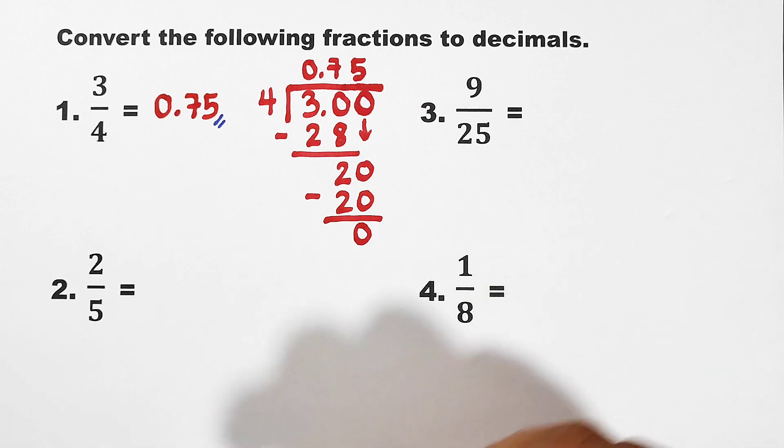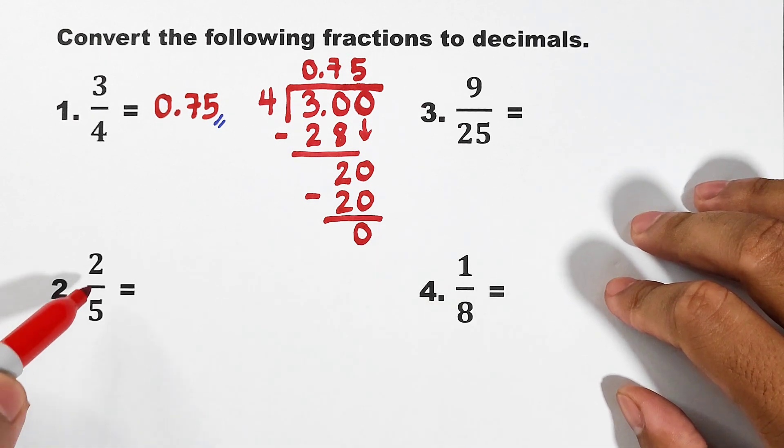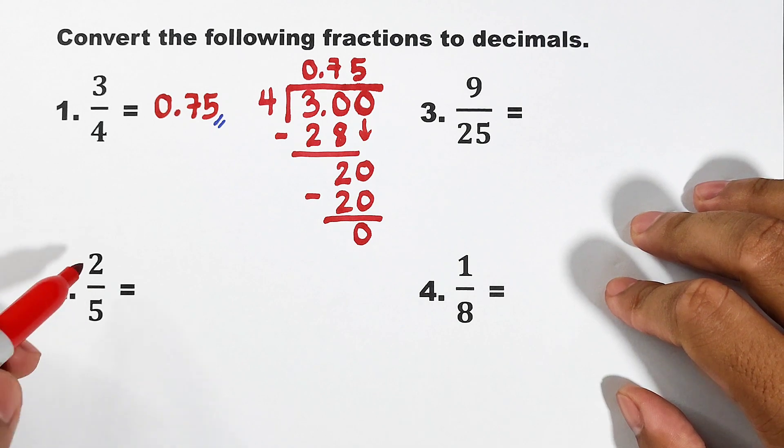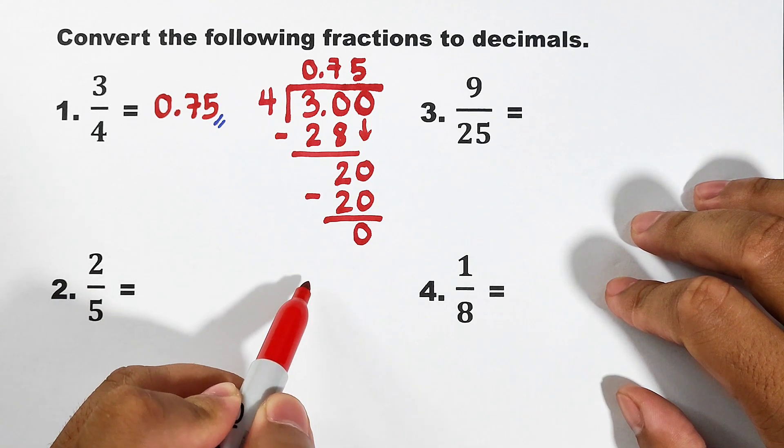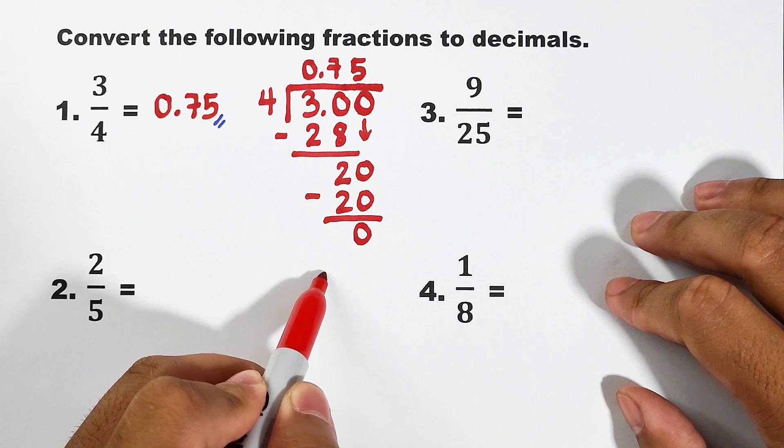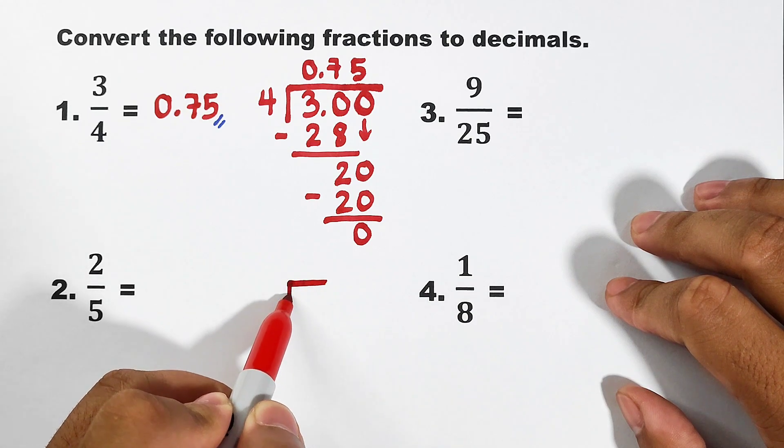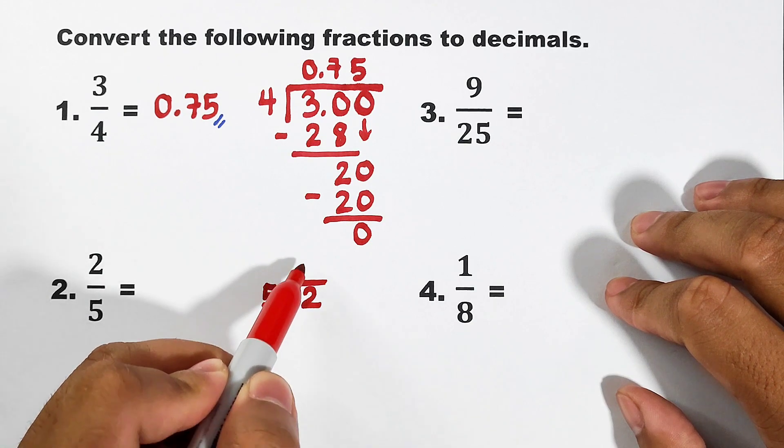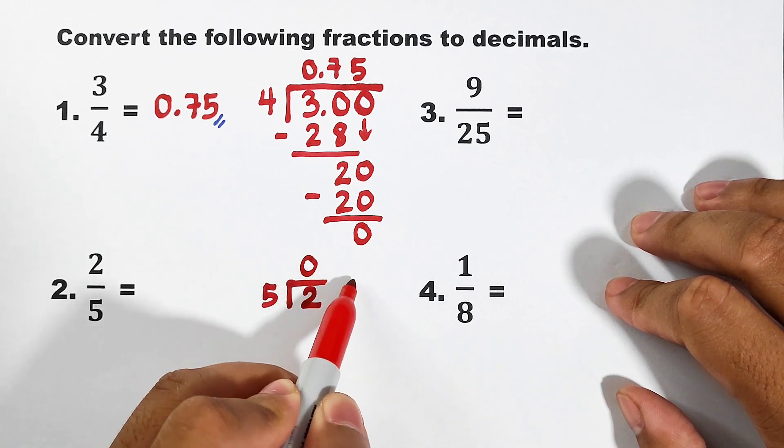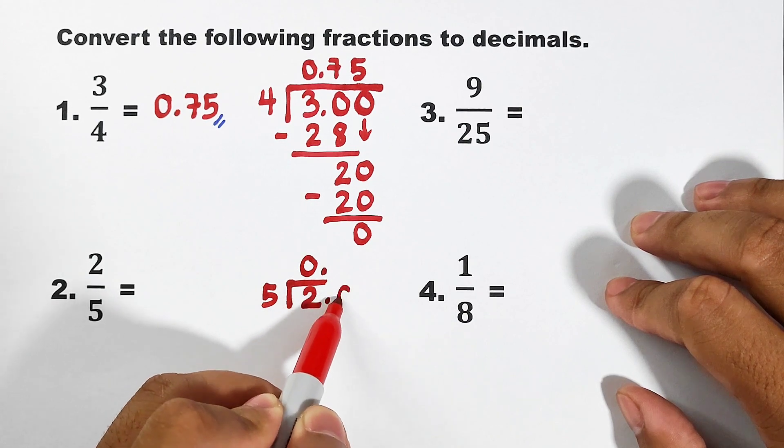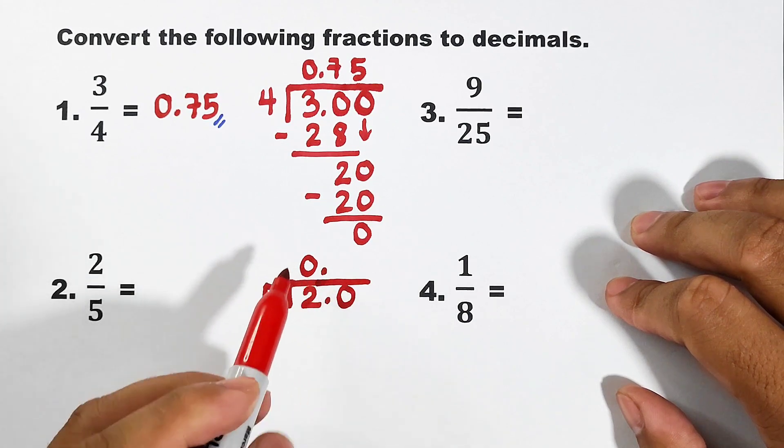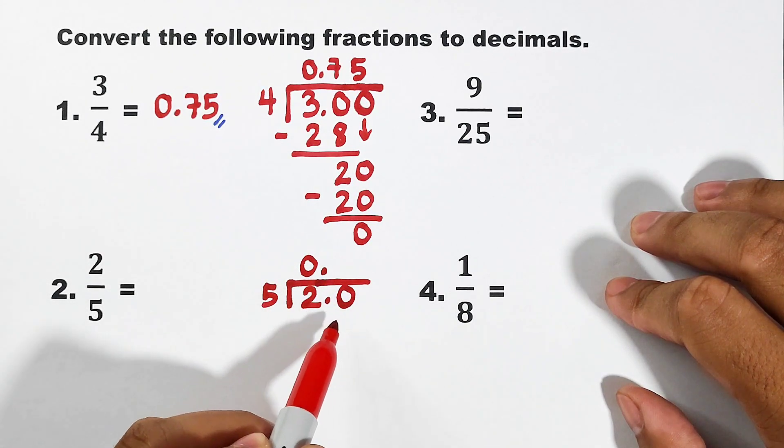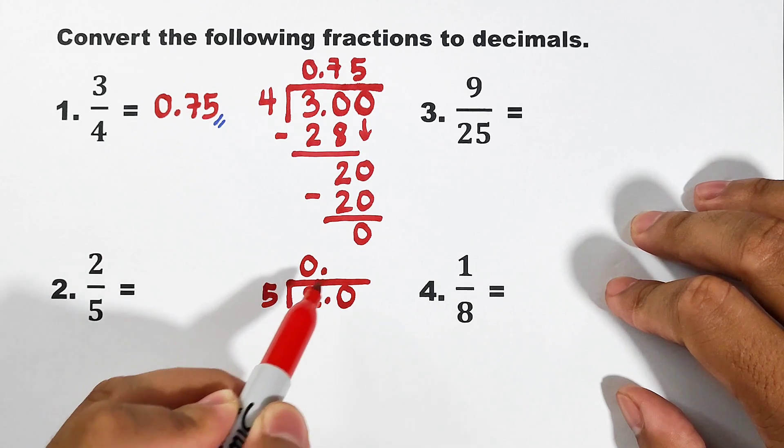Now, let's move on with item number 2. For number 2, we have 2 over 5. We will use long division. We have to divide 2 by 5. 2 divided by 5 is zero, meaning we will extend it by putting another 0. Now, we have 20.